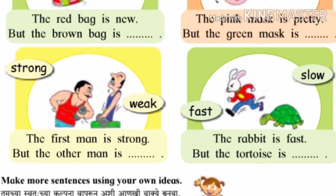Now come to the downside. In the first picture, two men are given and two words are given: strong and weak. The strong word is near the first man and the weak word is near the second man. Strong manje mazboot, weak manje kamzor. The first man is strong but the other man is weak. Strong and weak, both words are opposite to each other. Mazboot and kamzor.